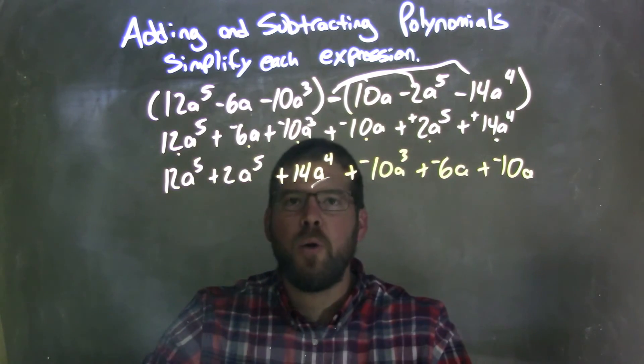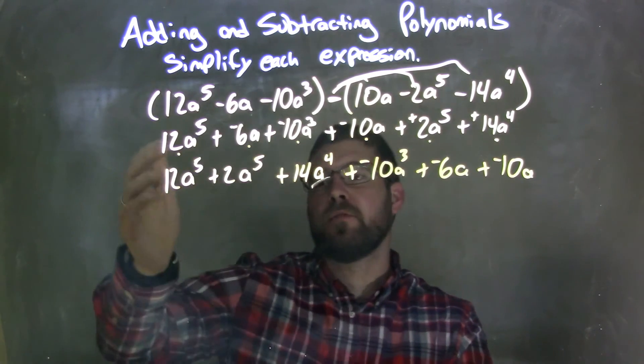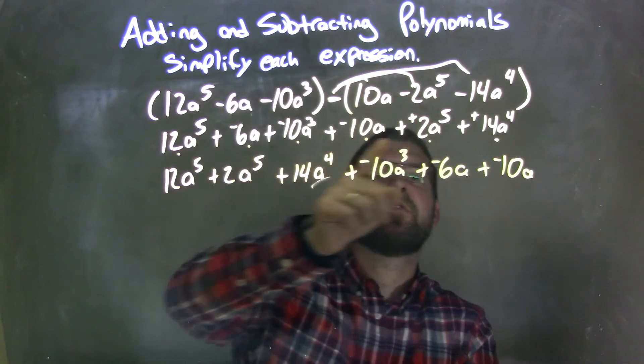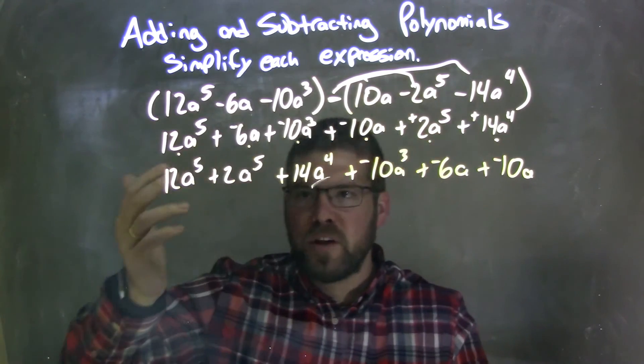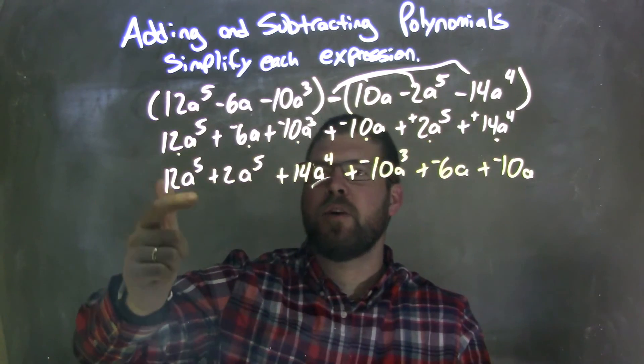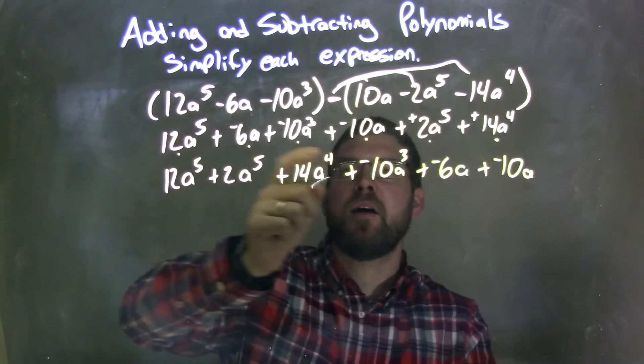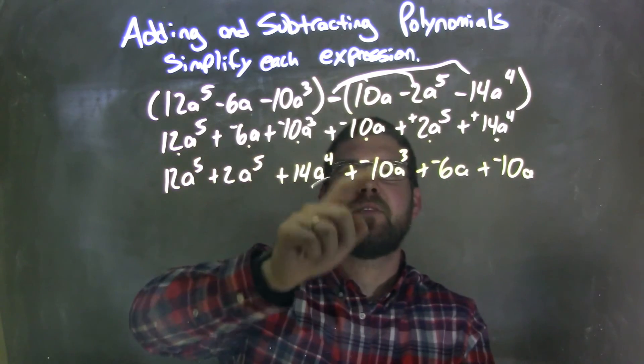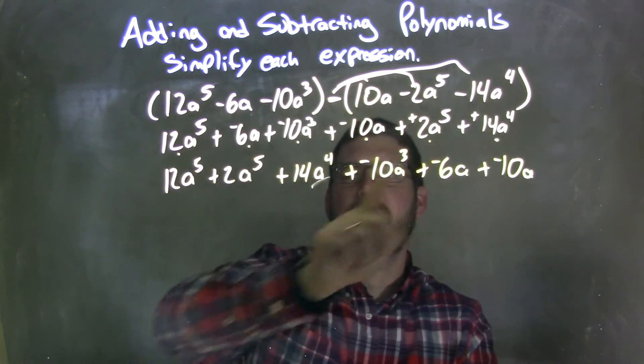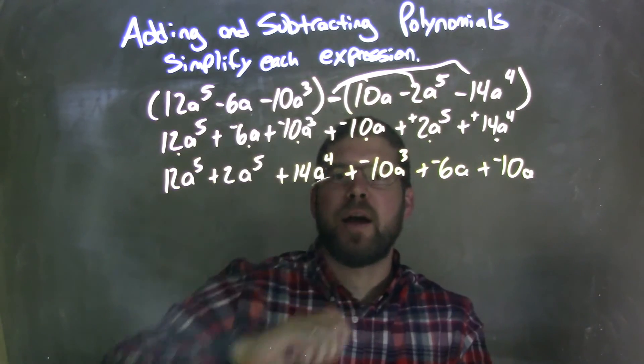So now let's combine our like terms, or let's double check and bring everything down. Every single one of these terms has a dot, so we should have brought it down. 12a to the 5th, negative 6a, negative 10a to the 3rd, fantastic. Negative 10a, 2a to the 5th, and 14a to the 4th.